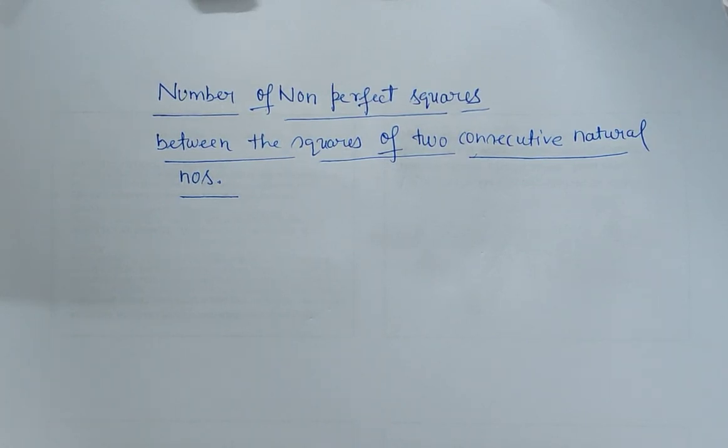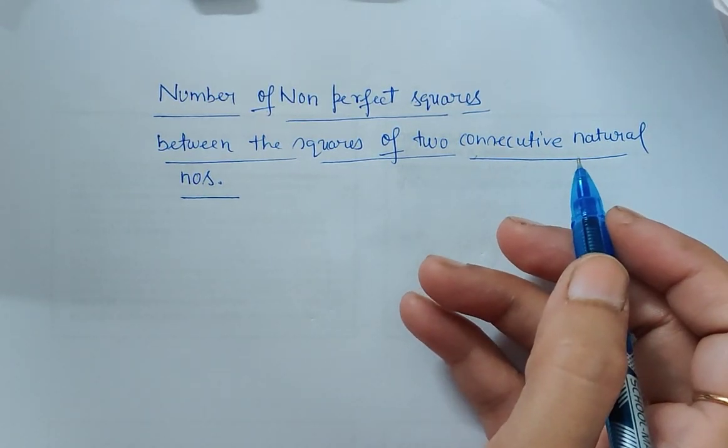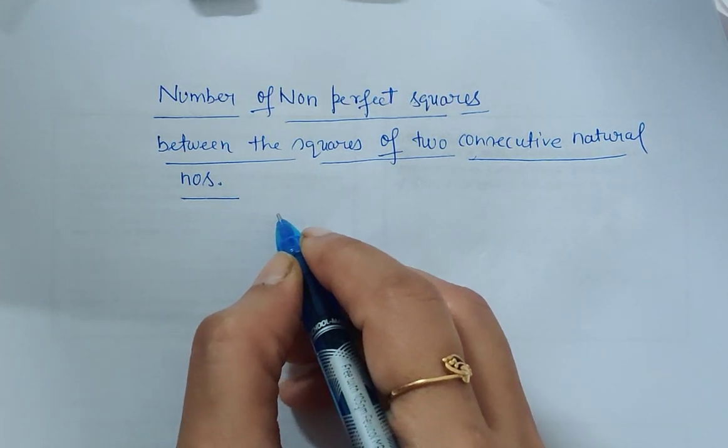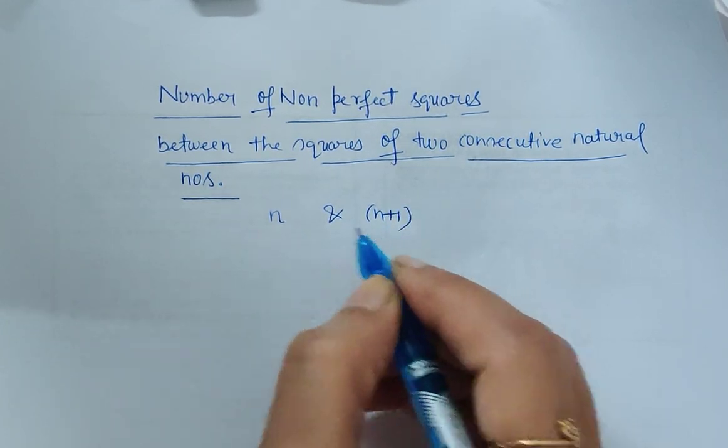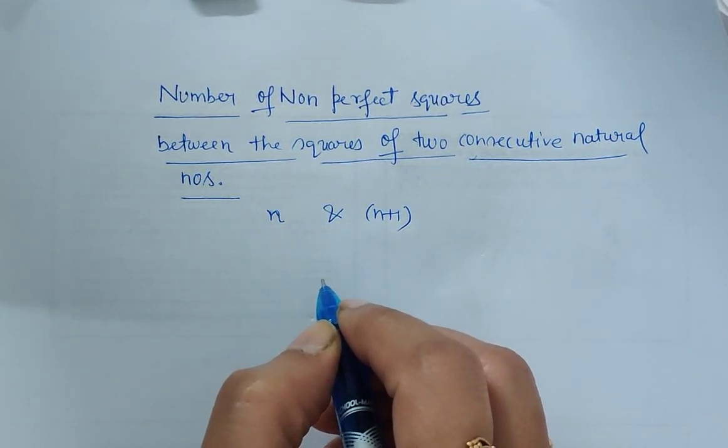Hello friends, in this video I'm going to explain a simple property for finding the number of non-perfect squares between the squares of two consecutive natural numbers. Suppose the consecutive natural numbers are n and n+1. We have to find the number of non-perfect squares between the squares of these two numbers.